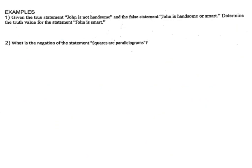Now let's look at a couple of examples. Question 1 — given the true statement 'John is not handsome' and the false statement 'John is handsome or smart.' John is not handsome — we're saying that is true. Notice it has NOT, so John being handsome must be false. This entire disjunction is false. How can a disjunction be false? Only when both parts are false. Therefore, 'John is smart' must be false.